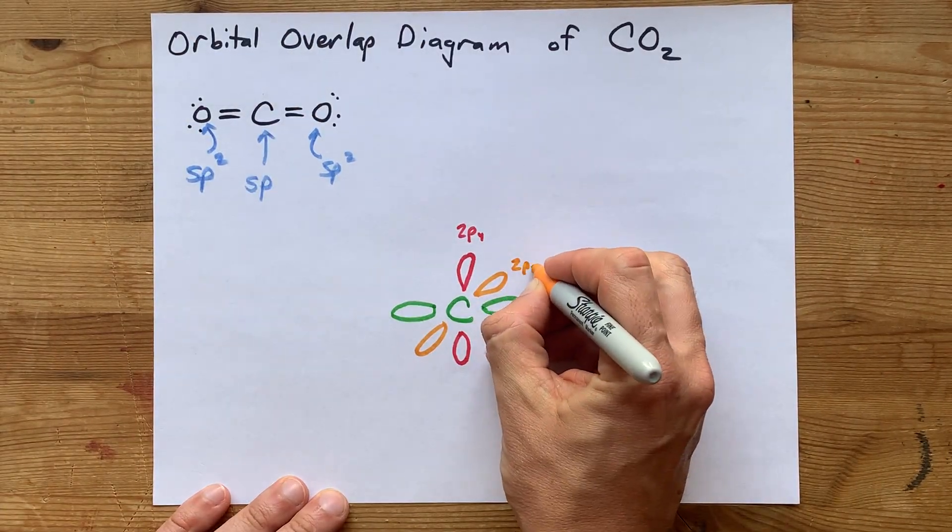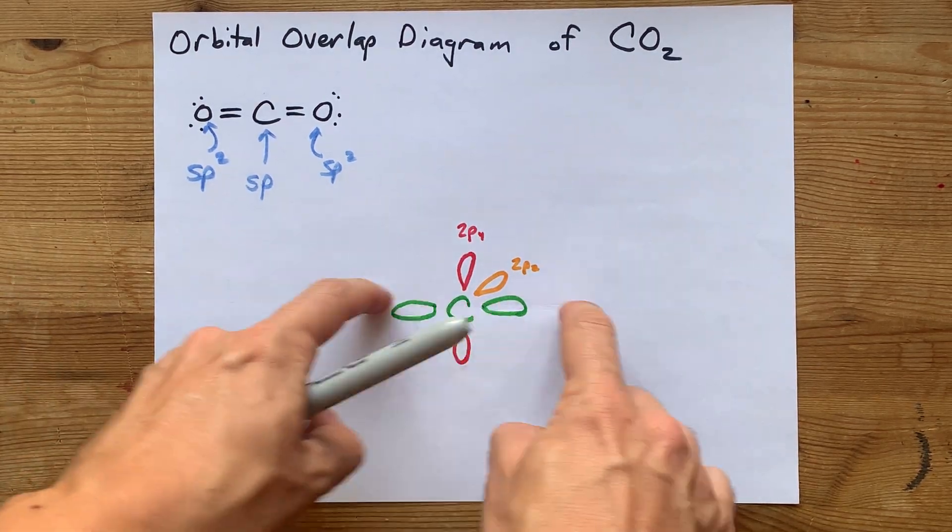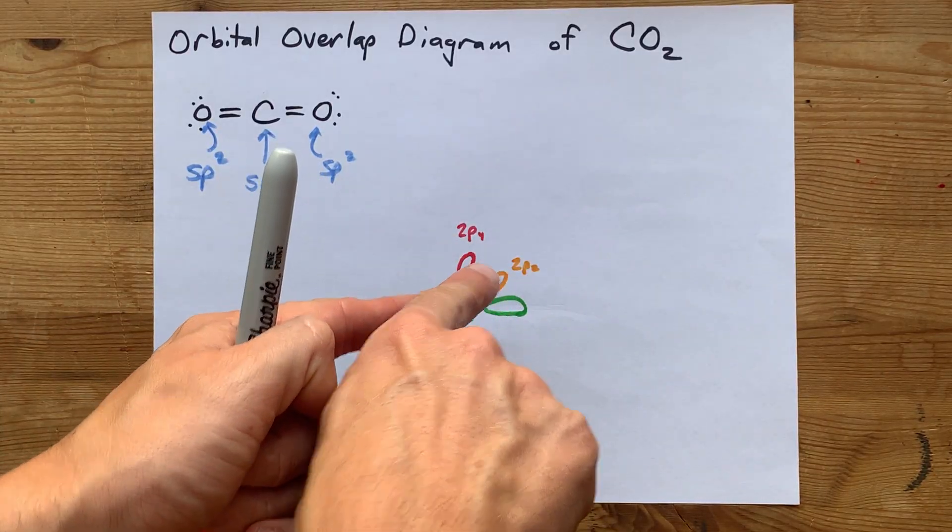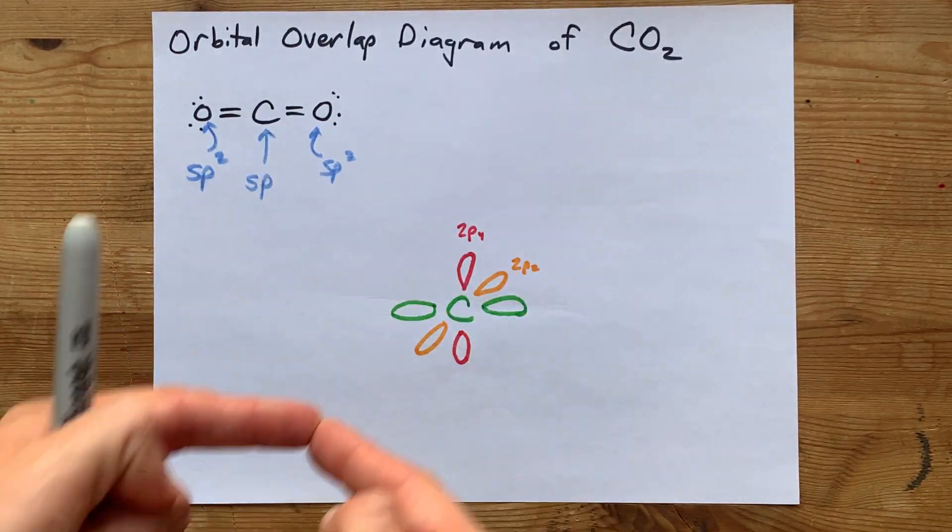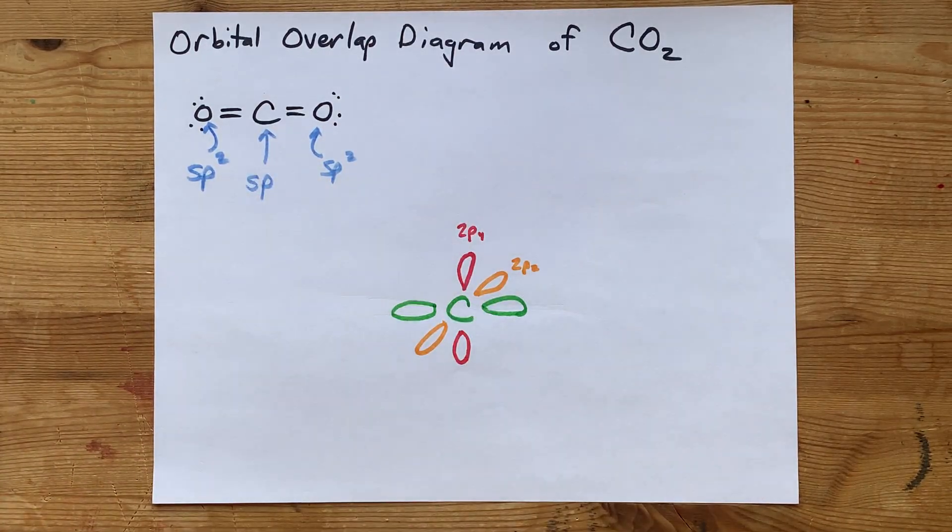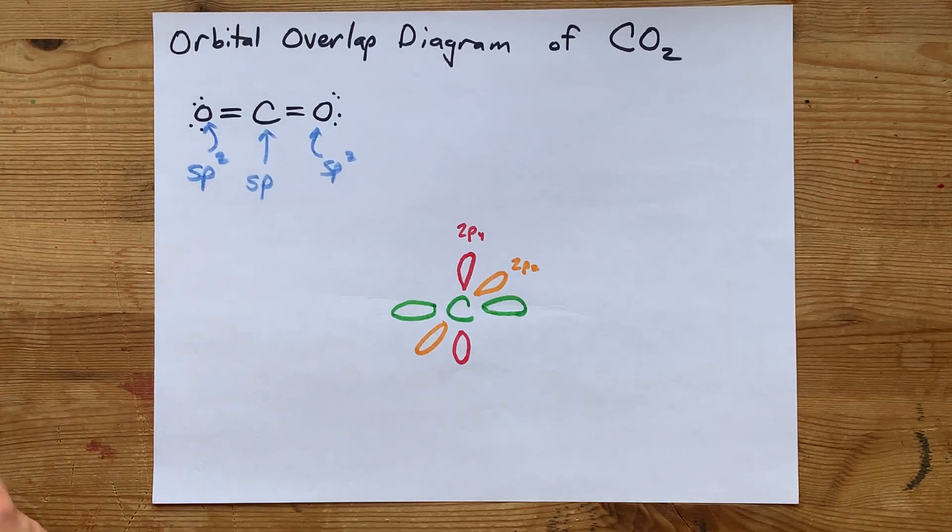Now, again, these ones are coming out horizontally. These ones are vertical. The p-z's are meant to be coming out at you and going into the page in three dimensions, but this is the best we can do, right? Now we're going to have to draw the oxygens and show where the overlap is actually happening.